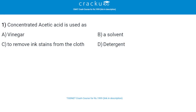Our first question is: concentrated acetic acid is used as — the correct answer is a solvent, that is option B. A solvent is a substance, ordinarily a liquid, in which other materials dissolve to form a solution.